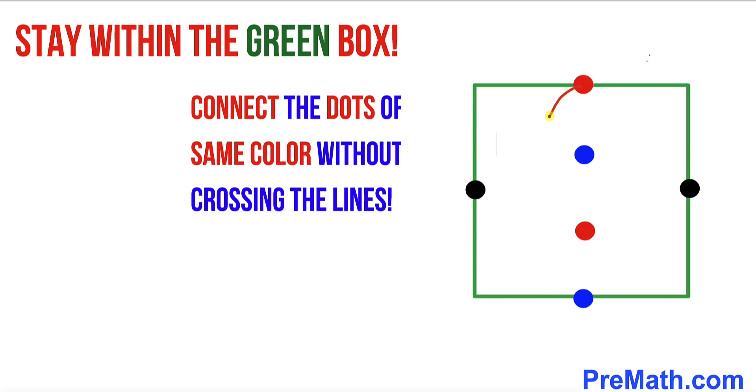If we connect this red dot with this same red dot, this blue dot with this blue dot, and then this black dot with this black dot. And it is still not the correct way since these two lines are intersecting each other.